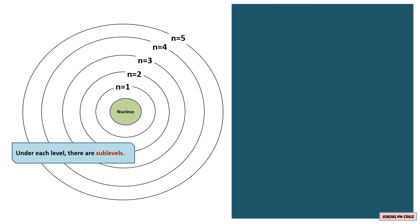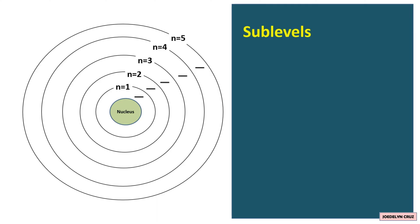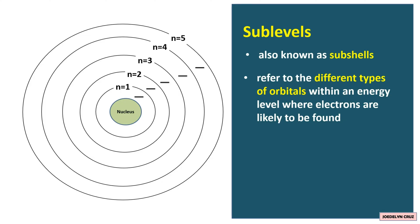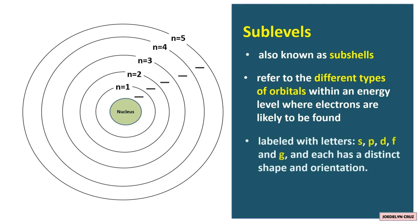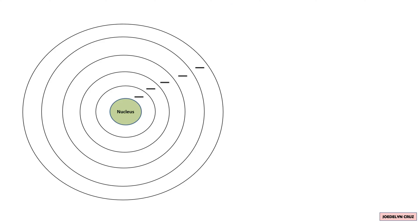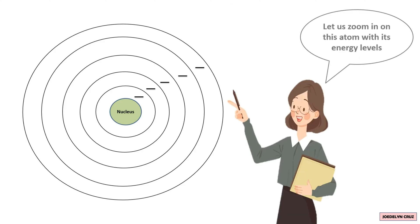Under each energy level, there are sublevels — one sublevel in the first energy level, more sublevels in the second energy level, and so on. The sublevels are also known as subshells. These refer to different types of orbitals within an energy level where electrons are likely to be found. The sublevels or subshells are labeled with letters S, P, D, and F, and each has a distinct shape and orientation.